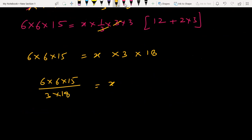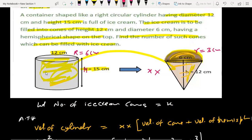After canceling, x equals 10. Therefore, 10 ice cream cones can be filled from this cylinder.